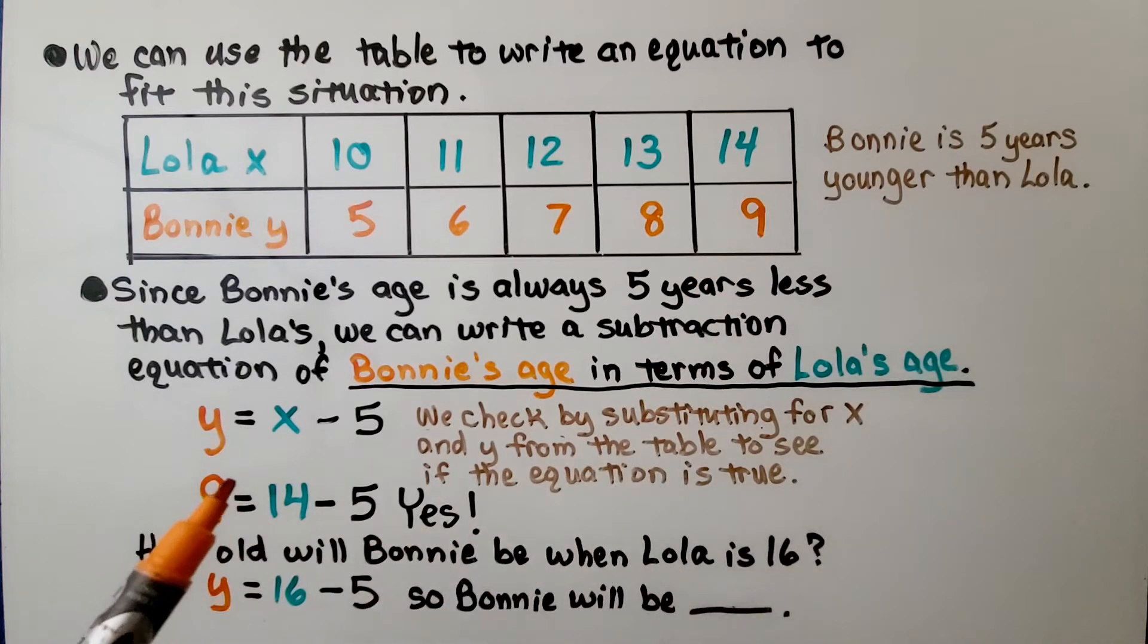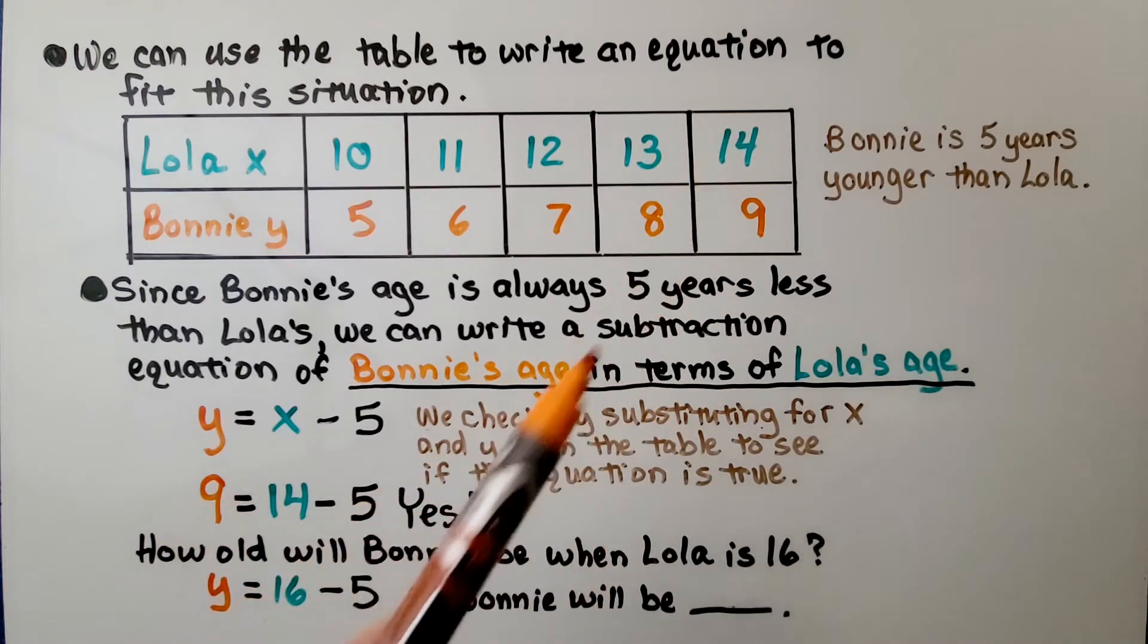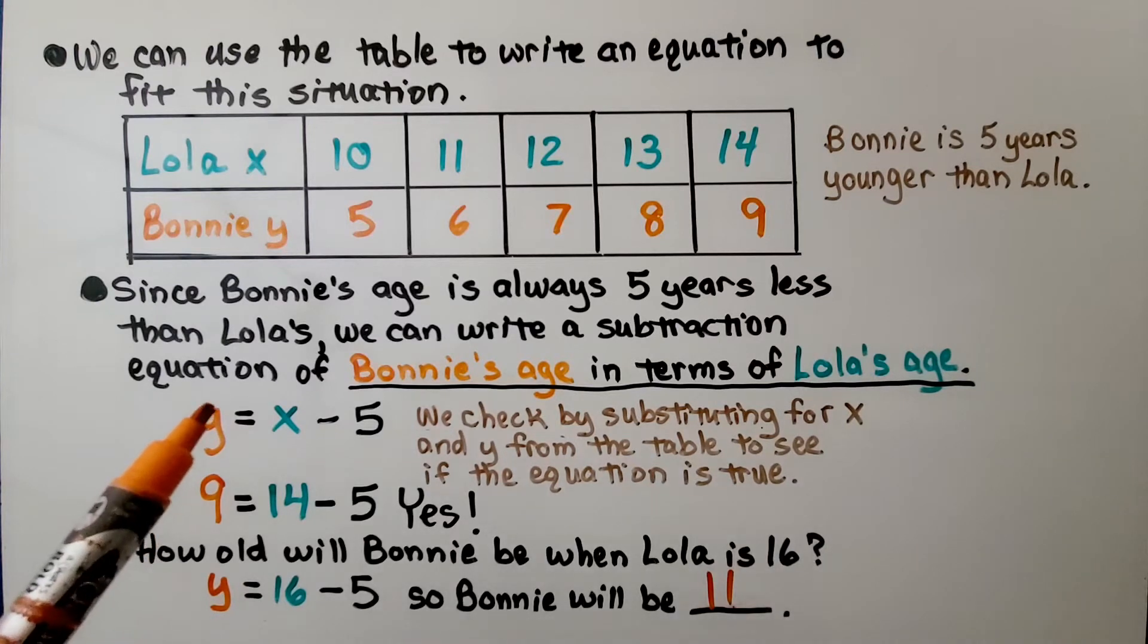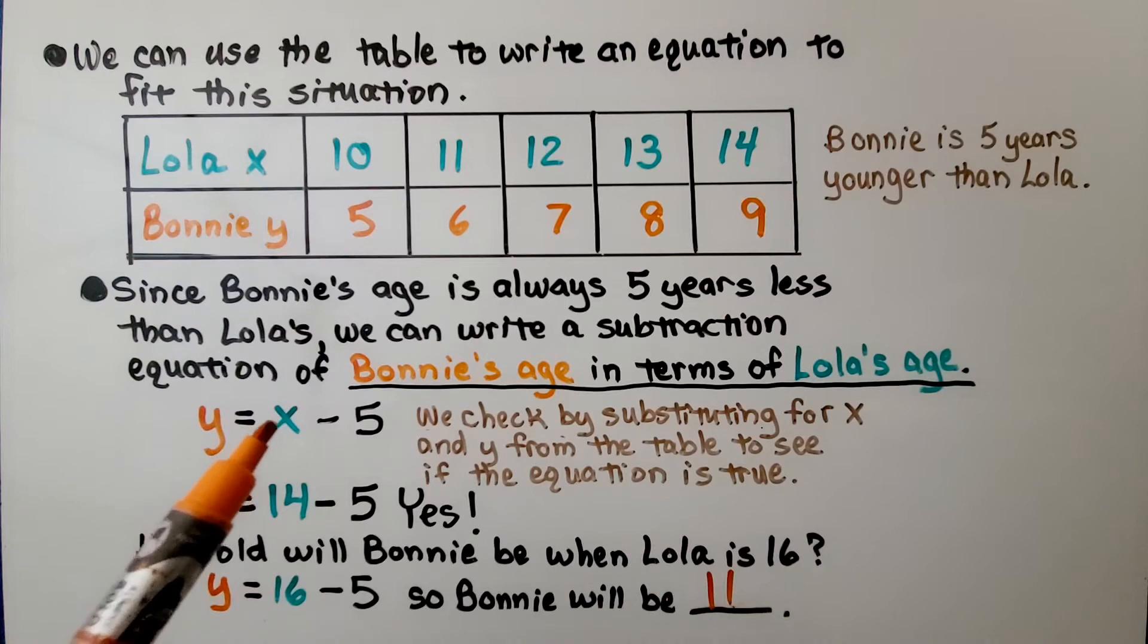9 equals 14 minus 5. Yes, that's true. So how old will Bonnie be when Lola is 16? We put 16 in place of x. y equals 16 minus 5. We find that Bonnie will be 11. She'll be 11 years old. We'll be able to use this equation to find Bonnie's age at any age for Lola.